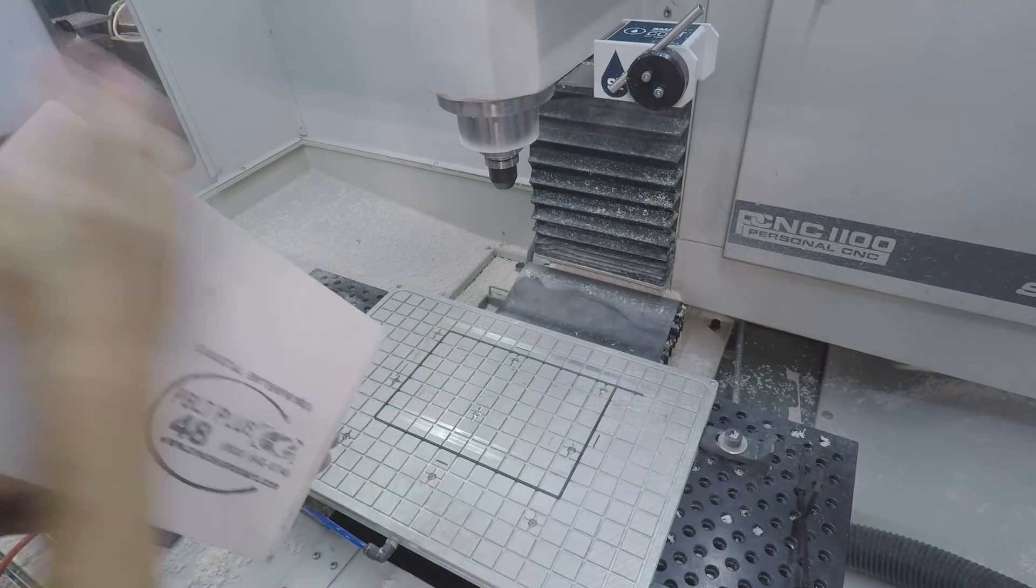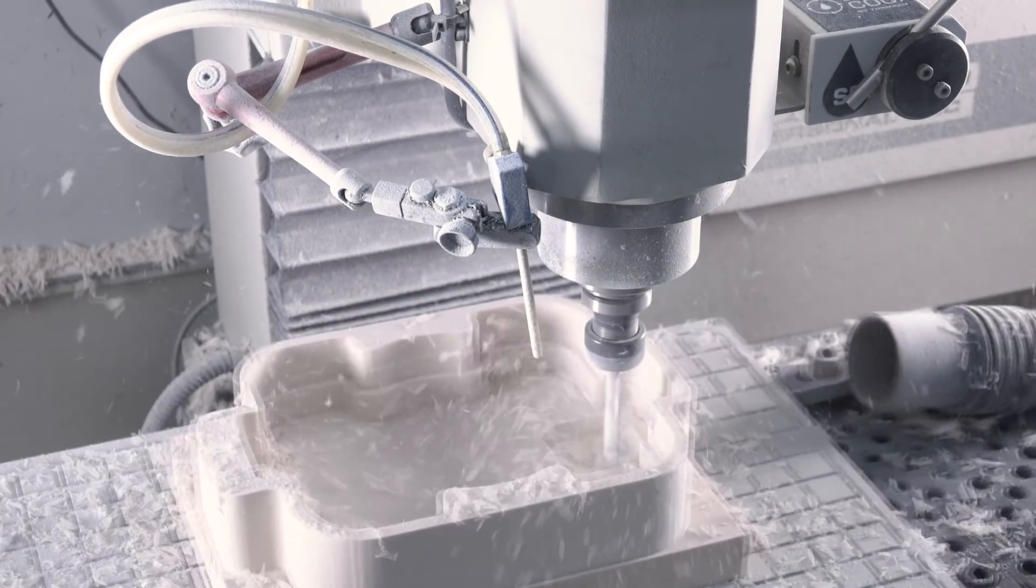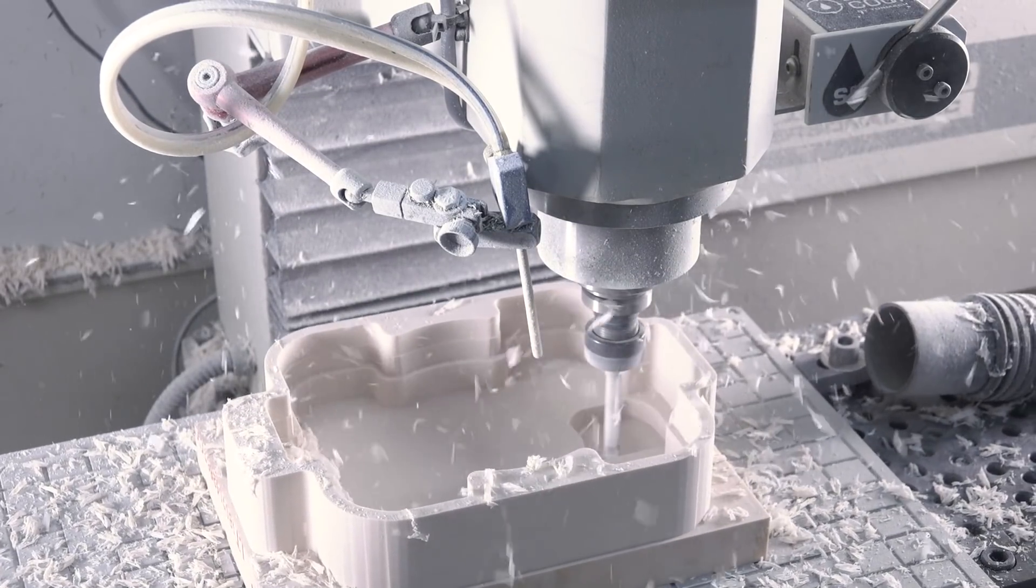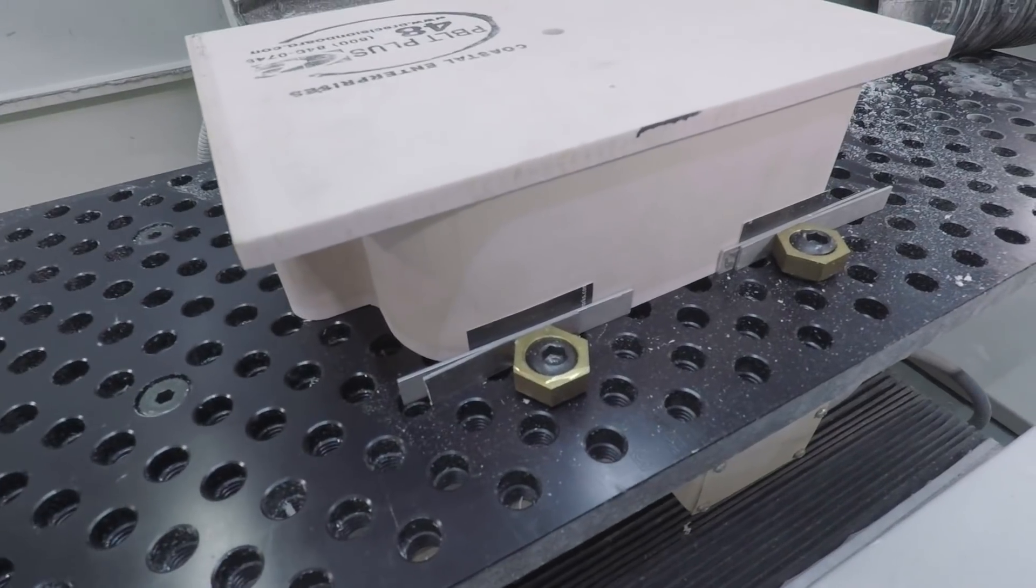So we started off op 1 with a vacuum work holding plate. That did great for the majority of the material removal. We then flipped the part over and used a combination of alignment blocks and the Mighty Byte eccentric hex clamps.